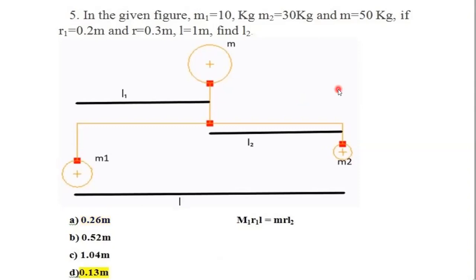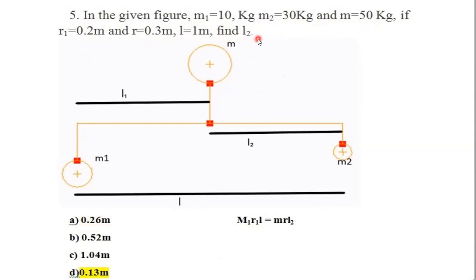Next problem has the same diagram but with changed values: M1=10 kg, M2=30 kg. The formula is the same: M1R1L = MRL2. Substituting M1=10, R1=0.2, L=1 meter, M=50, R=0.3, we determine L2 = 0.13 meter.